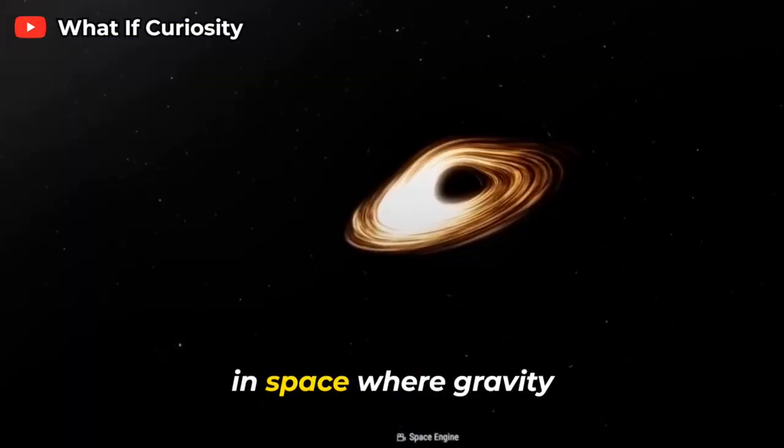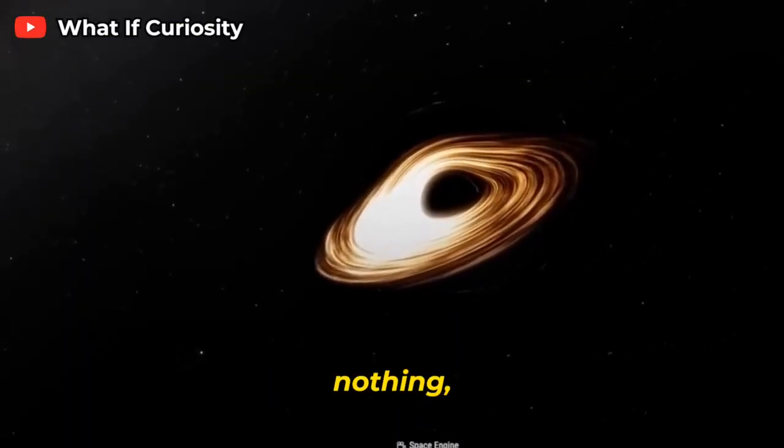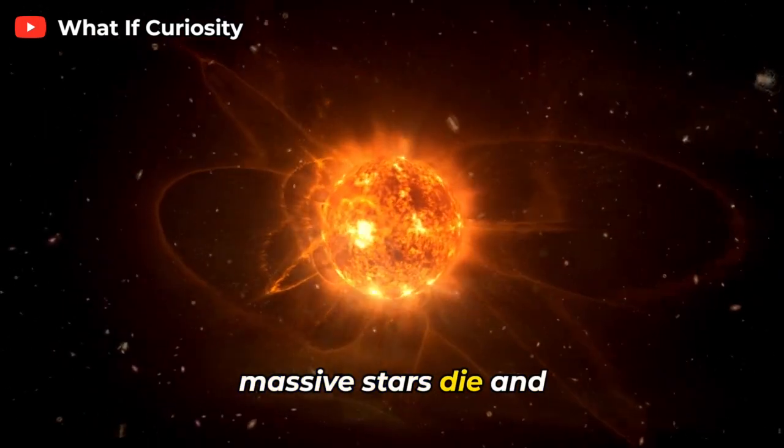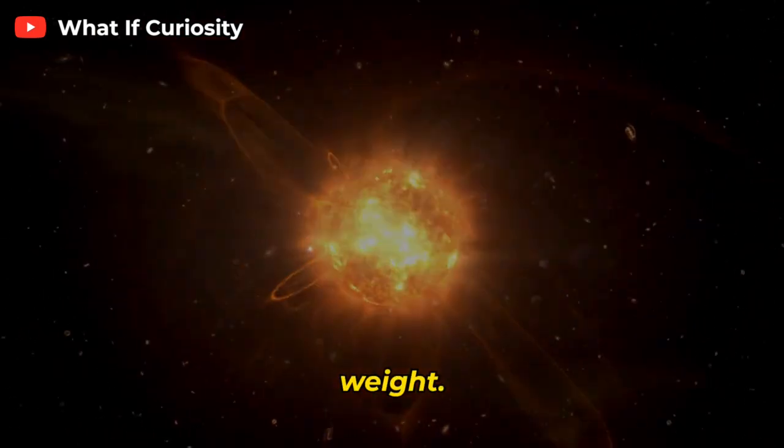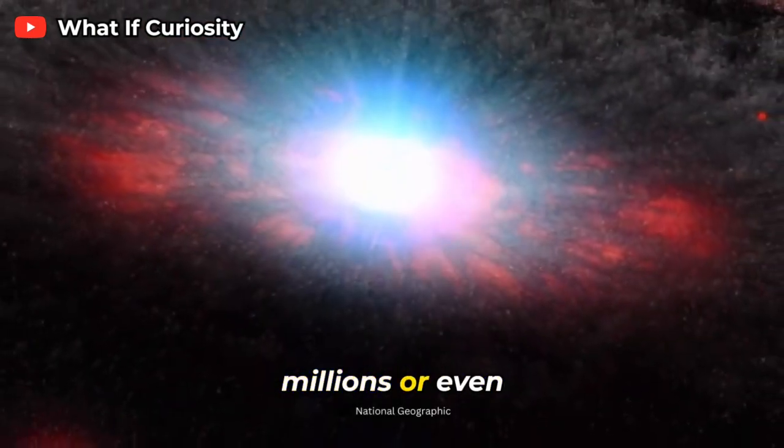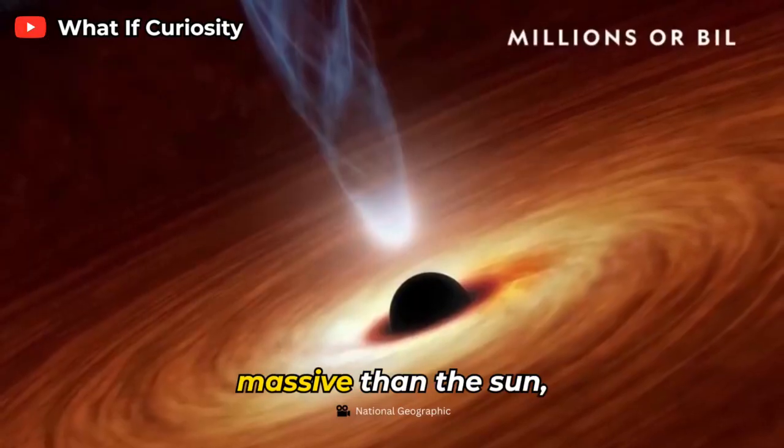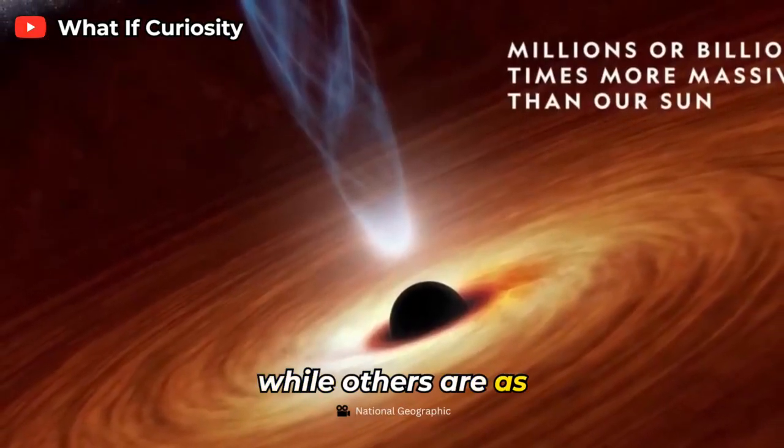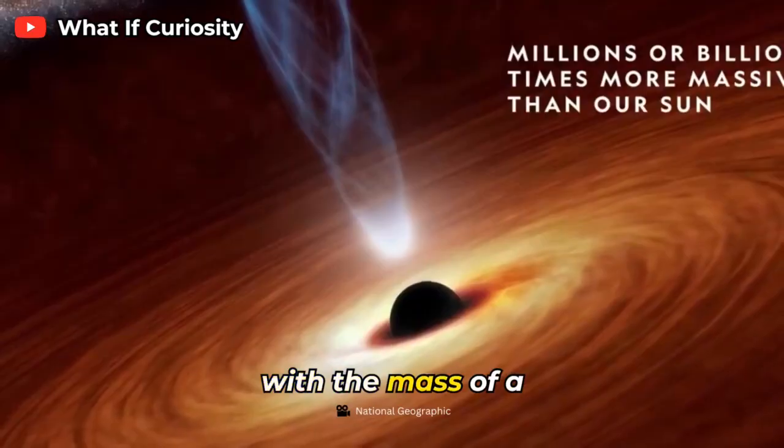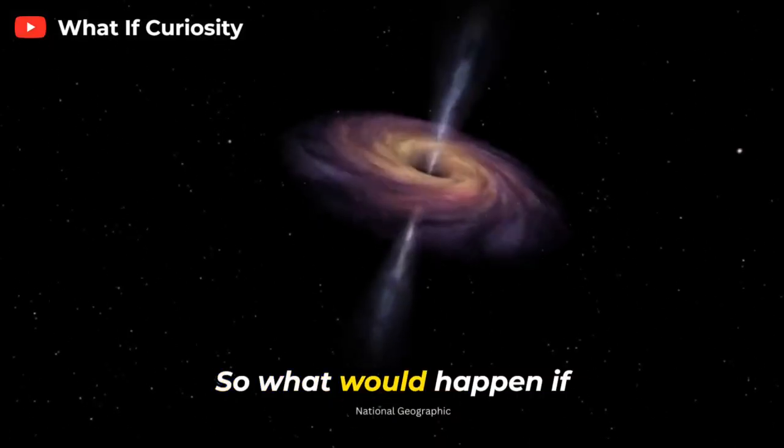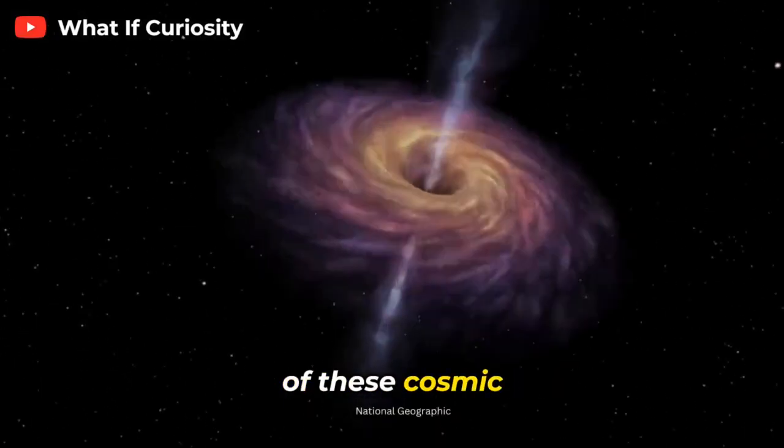A black hole is a place in space where gravity is so strong that nothing, not even light can escape. They are formed when massive stars die and collapse under their own weight. Some black holes are millions or even billions of times more massive than the sun, while others are as small as an atom but with the mass of a mountain. So what would happen if you got too close to one of these cosmic monsters?